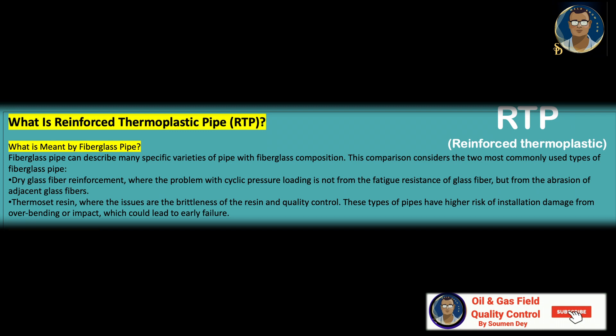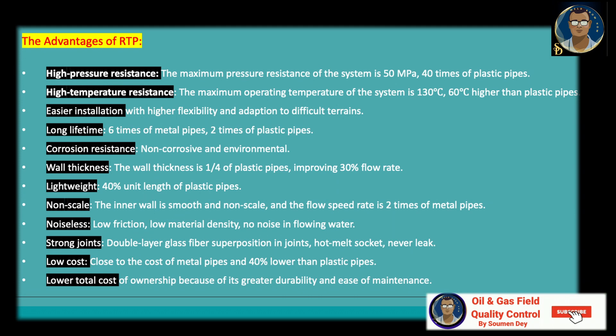Fiberglass pipe can describe many specific varieties of pipe with fiberglass composition. The comparison considers the two most commonly used types. Number one is dry glass fiber reinforcement, where the problem with cyclic pressure loading is not from the fatigue resistance of glass fiber but from the abrasion of adjacent glass fibers. The second type is thermoset resin, where the issues are the brittleness of the resin and quality control. These types of pipes have a higher risk of installation damage from overbending or impact, which could lead to early failure.